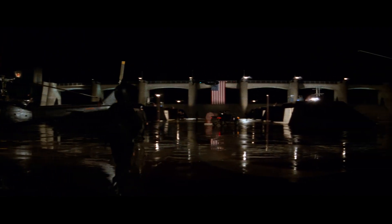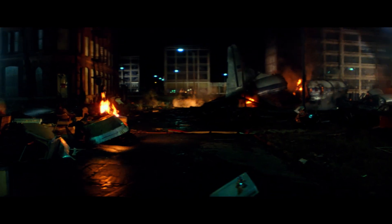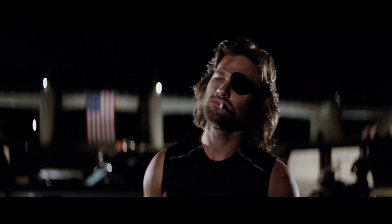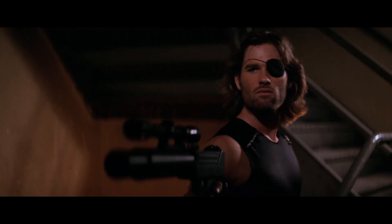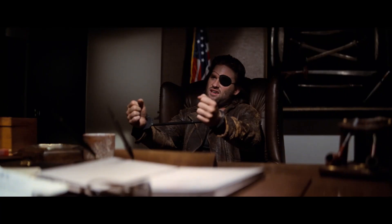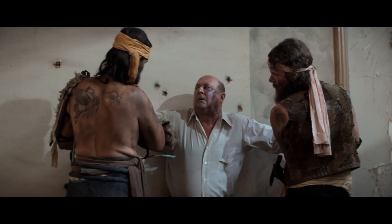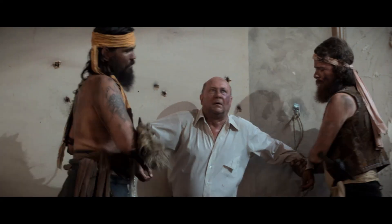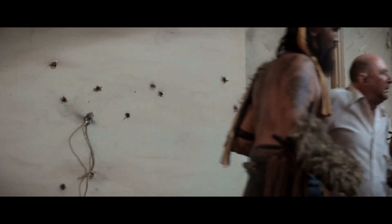Escape from New York takes place in the near future world of 1997 in a crime-ridden United States. The film follows Snake Plissken, played by Kurt Russell, an ex-soldier turned criminal who is forcefully tasked with infiltrating the prison island of Manhattan. His mission? To rescue the trapped President of the United States, played by Donald Pleasence.